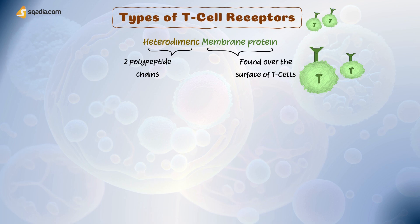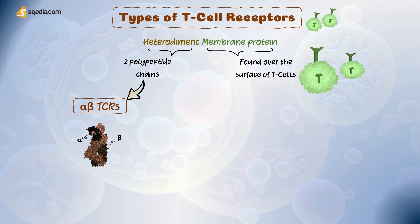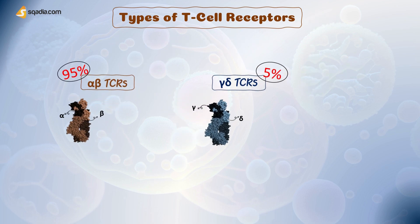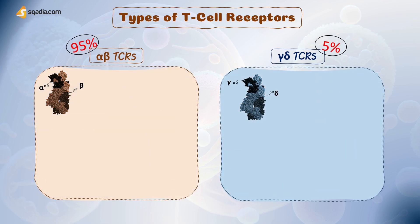On the basis of these chains, two types of TCRs have been identified: alpha-beta TCRs, which are made of alpha and beta chains, and gamma-delta TCRs, which are made of gamma and delta chains. The alpha-beta type is present on approximately 95% of human T-lymphocytes, whereas gamma-delta TCRs are found on approximately 5%. So alpha-beta TCR is the predominant human TCR, found on MHC-restricted T-cells.